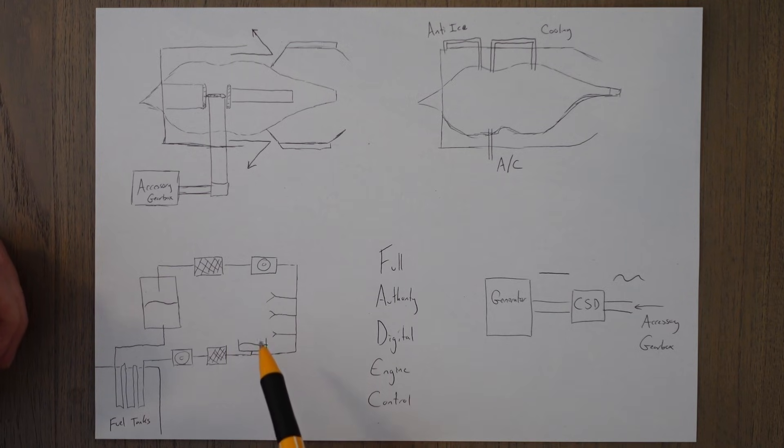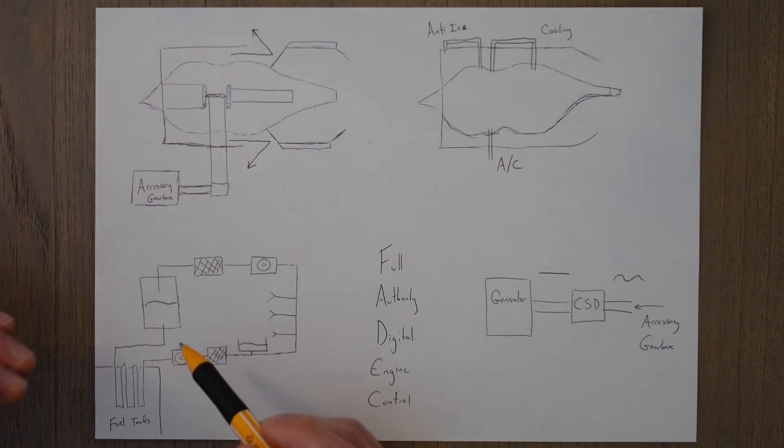The sump collects all the hot and used up oil, and then a scavenge pump will suck all that fuel out of the sump. And then before it returns to the reservoir, it goes through a fuel-oil heat exchange to cool the oil back down to reasonable temperatures whilst also having the benefit of heating up the fuel slightly.